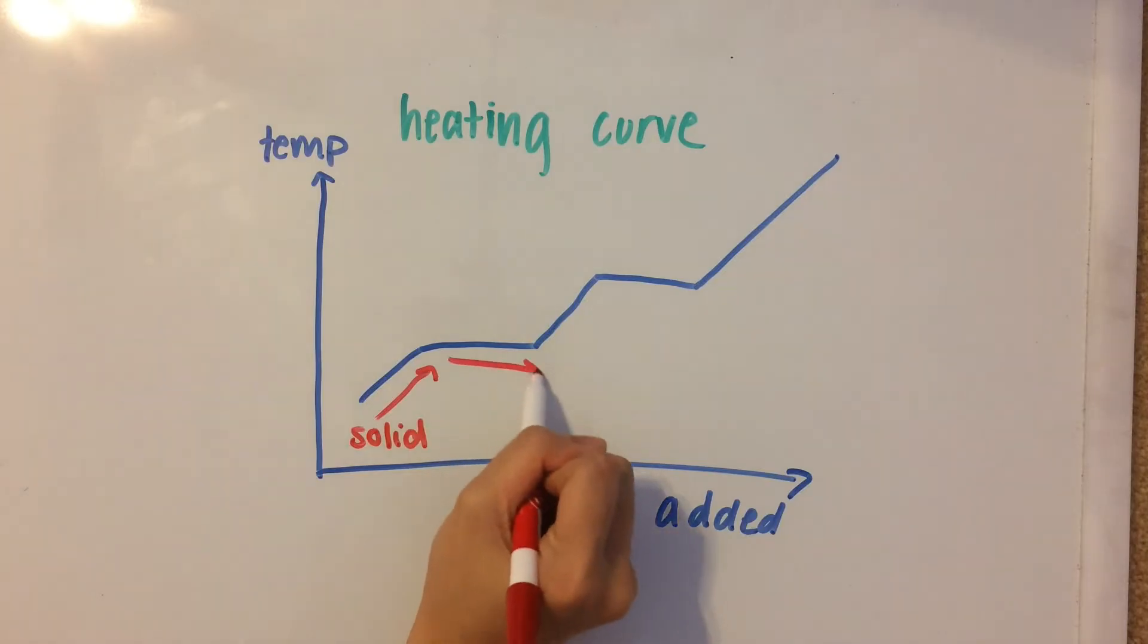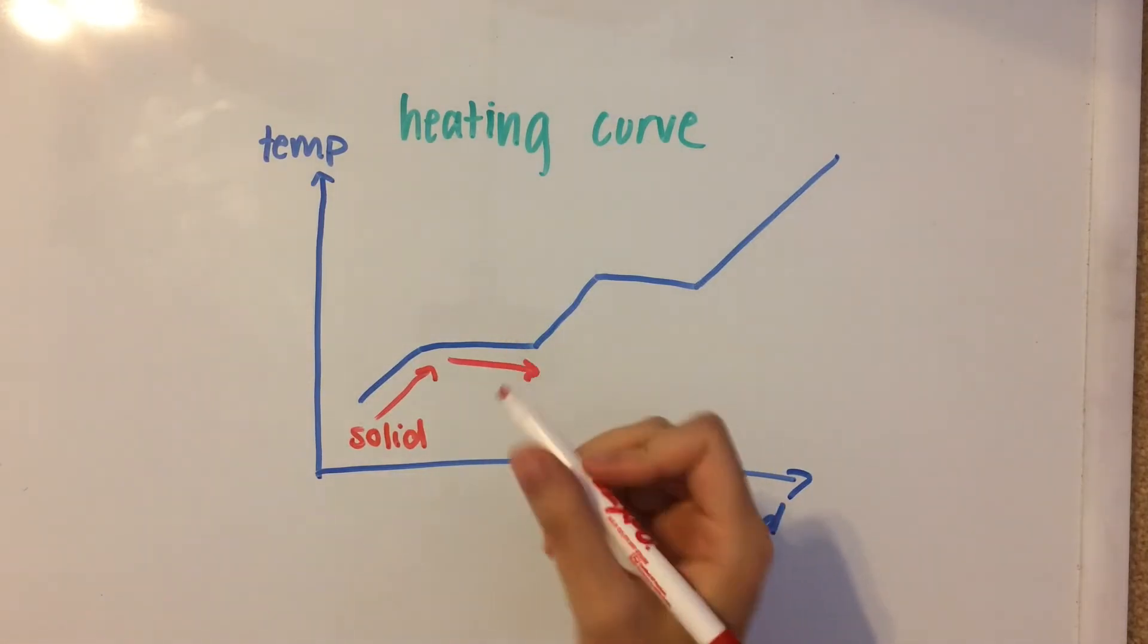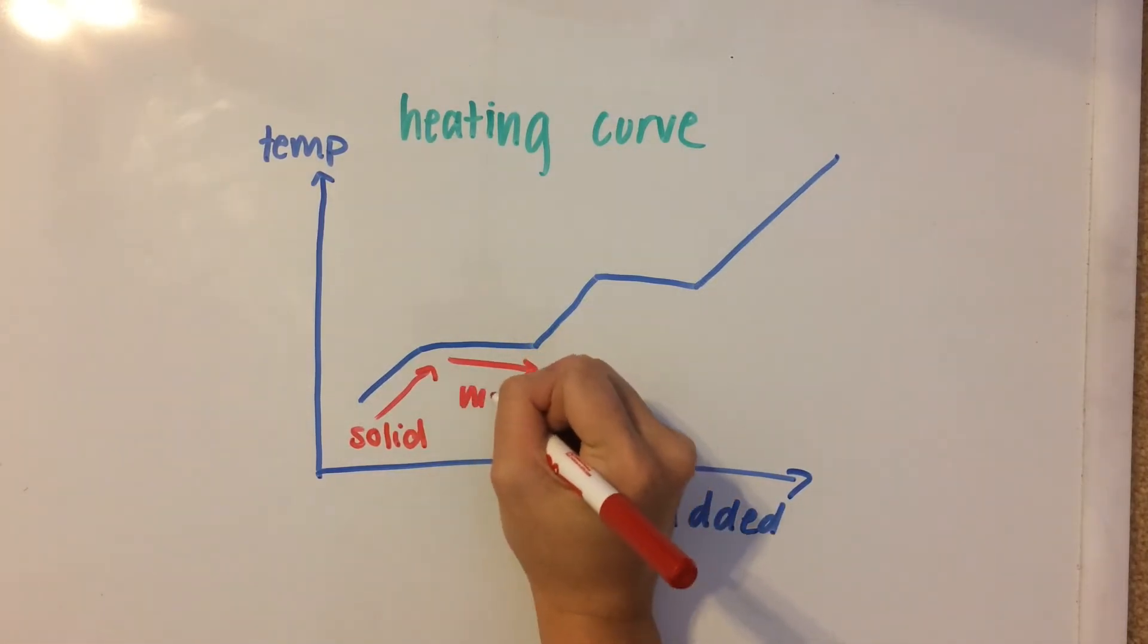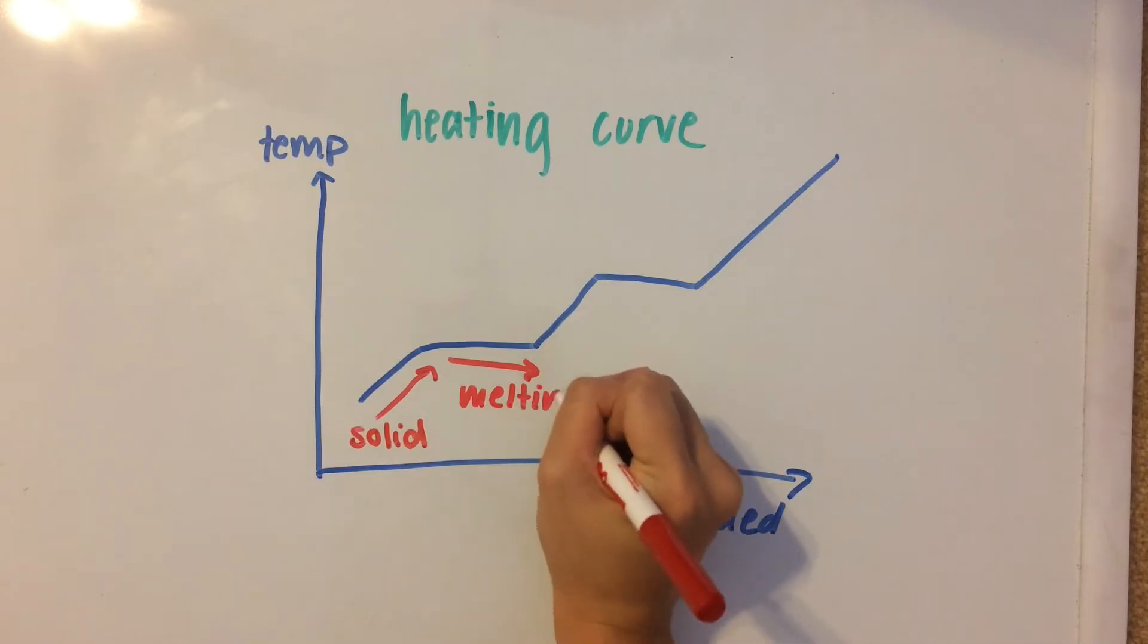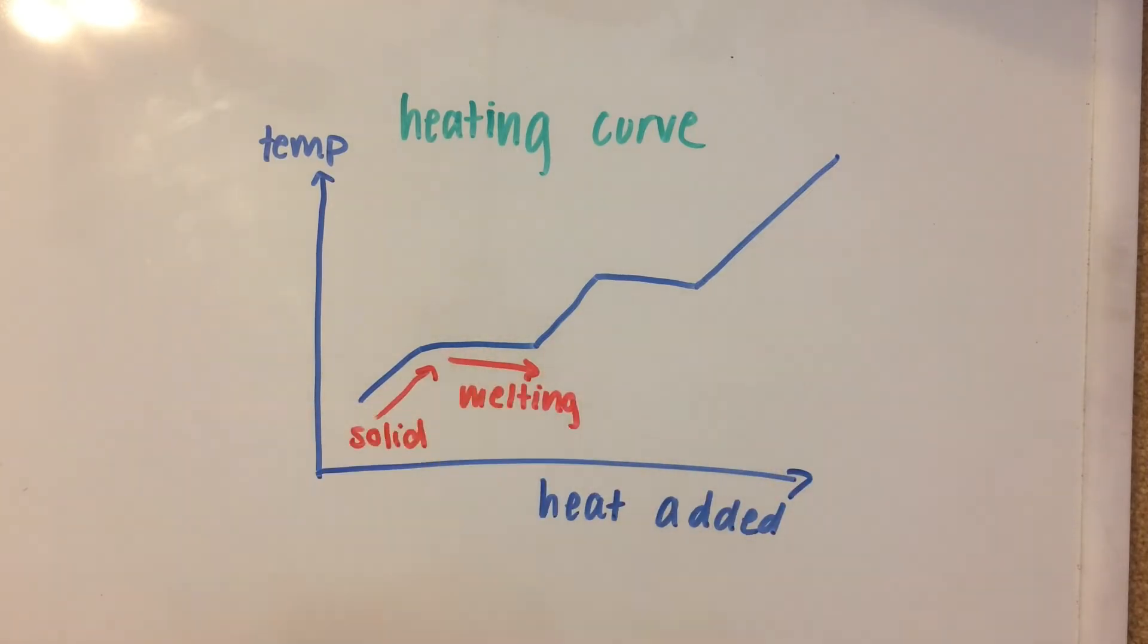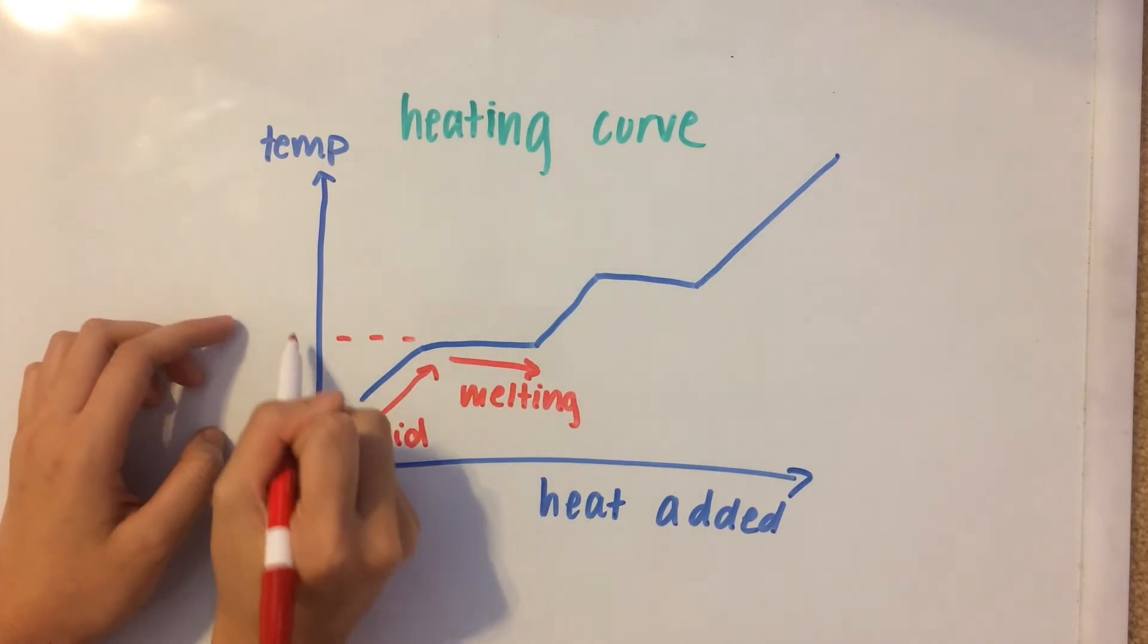And then it gets to this horizontal plateau, and that's when it's going to be melting. So, the solid is melting during this phase. So, if you add more heat to the solid at its melting point, so this is going to be the melting point, you can read it off of here.